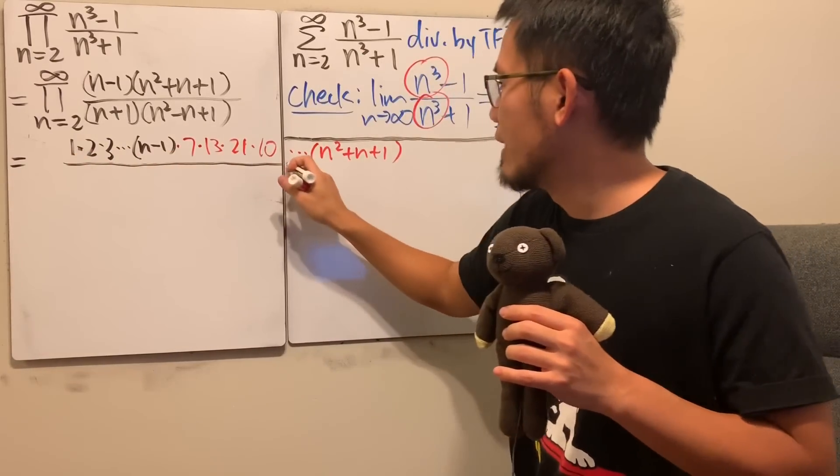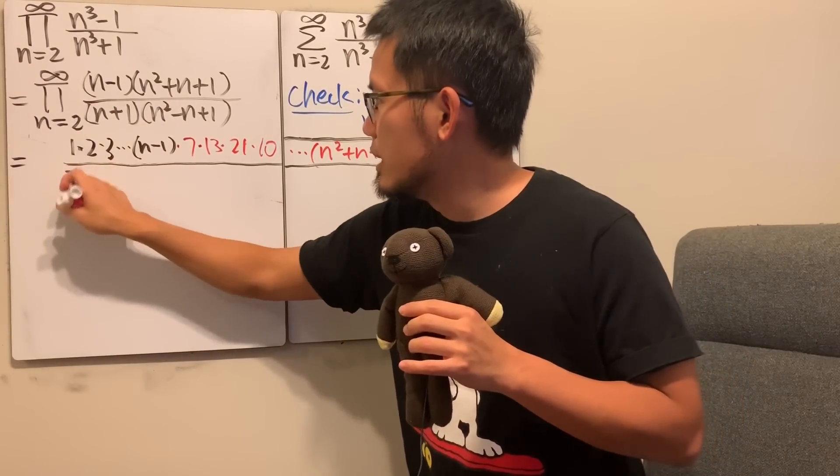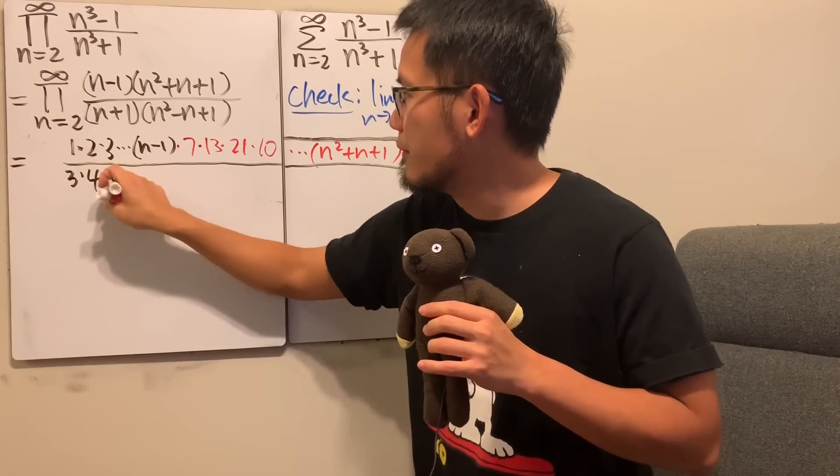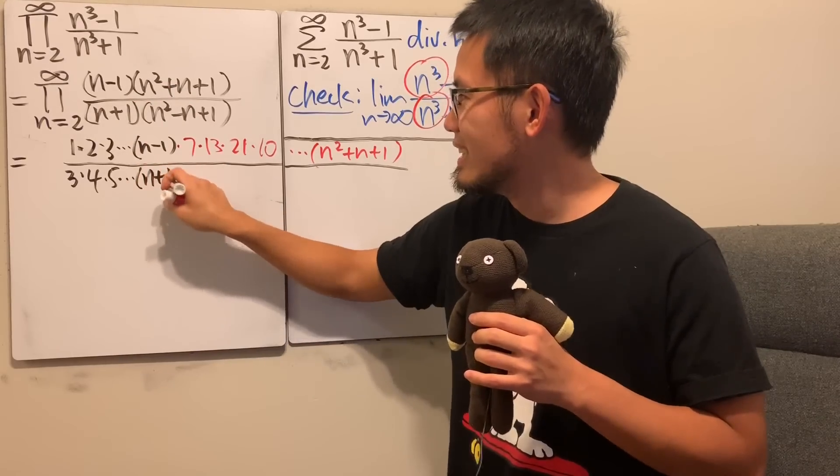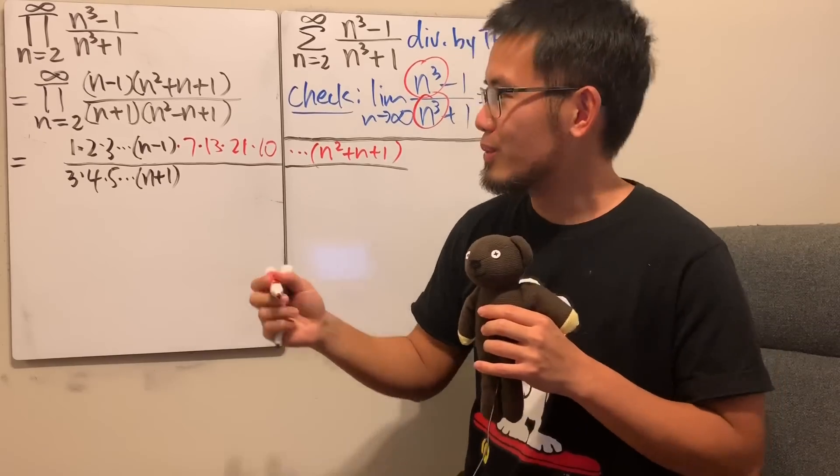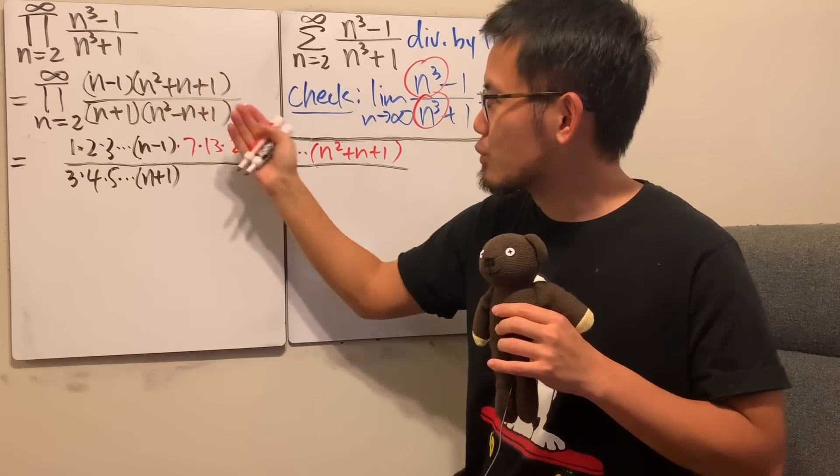Now, let's see what we have on the bottom. Plug in 2 in here, we get 3. Plug in 3 in here, we get 4. And then 5 is da-da-da, up to n plus 1. All right, here we go, we do the red numbers again. Plug in 2 in here, this is 4 minus 2, and then plus 1, which is 3. And then plug in 3, you get 9 minus 3, and then plus 1 is 7.